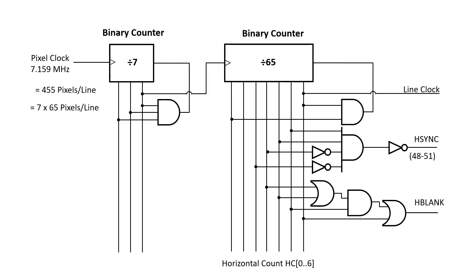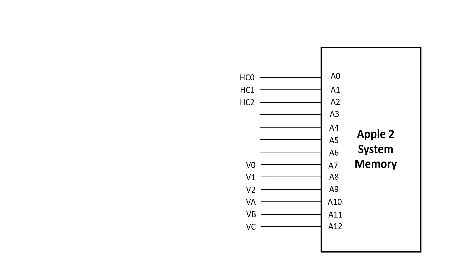Both 120 and 128 are divisible by 8, so we can just take the first three bits of the column number and map them directly to A0, A1, and A2. More specifically, signals HC0, HC1, and HC2 directly map to main memory A0, A1, and A2. So this just leaves us with these four bits — A3 through A6 — that we have to figure out.